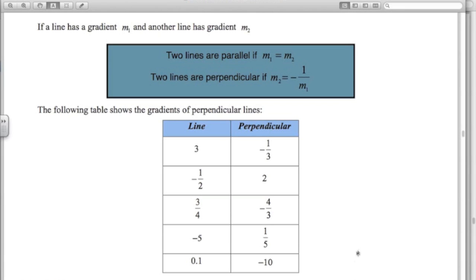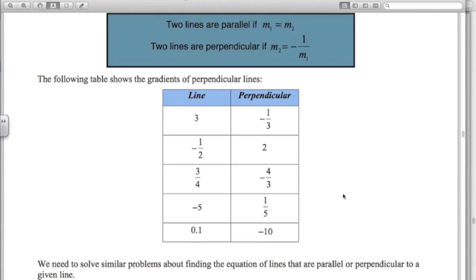That's the first thing that you have to understand. How to start with the gradient of a line and work out what the gradient of a line perpendicular to that line is going to be. So hopefully that's clear.